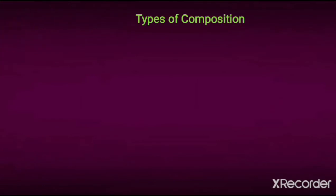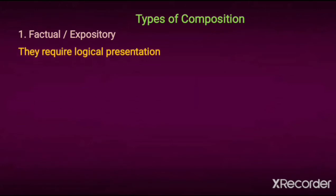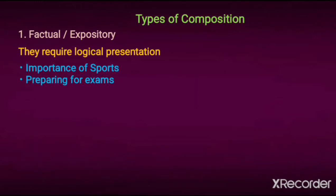Types of composition. Composition can be broadly categorized into two types. The first one is factual or expository composition. Factual compositions present bare facts with accuracy and they do not require any imagination. They require logical presentation but in an interesting manner to retain the reader's attention, and they normally do not have the writer's opinion or feelings. Examples include the importance of sports, preparing for exams, etc.